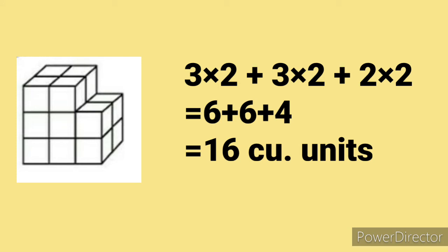Next, in this figure, there are 3 layers. The bottom 2 layers are the same and the upper part is 2 by 2. Therefore the volume is: the bottom is 3 times 2, so 3 times 2 plus 3 times 2 plus 2 times 2, that equals 6 plus 6 plus 4 equals 16 cubic units.